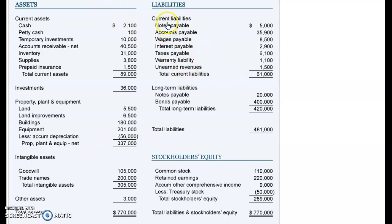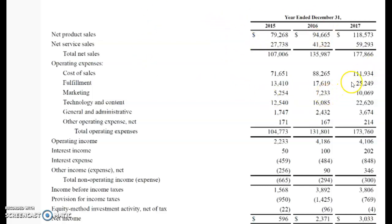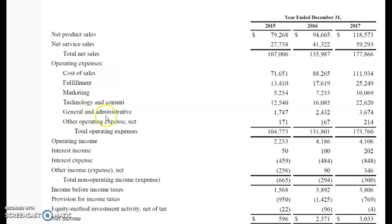I will be going more in depth into every financial statement in a later video. Now, this is the income statement. An income statement covers a period of time, normally a calendar year — January to December. It starts off with sales for the year, and you can see comparisons to past years as well. You'll have your operating expenses — wages, marketing, office expenses — and then sales minus all expenses gives you your net income for the year.